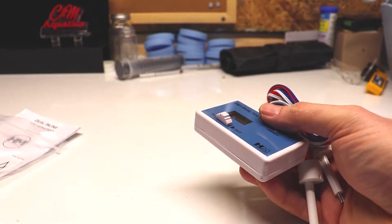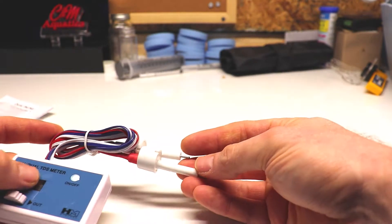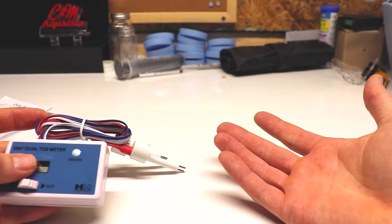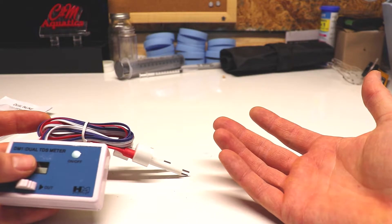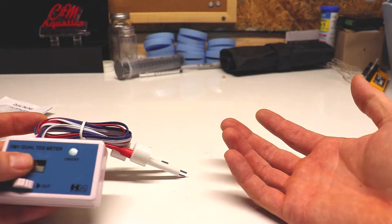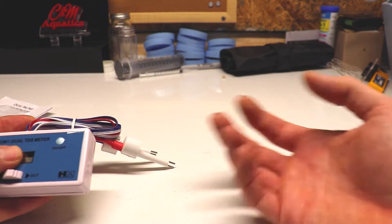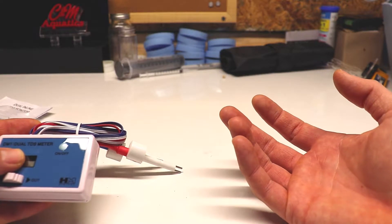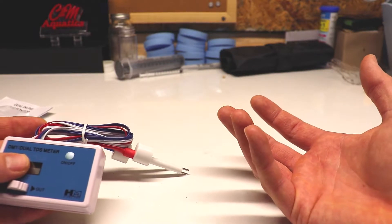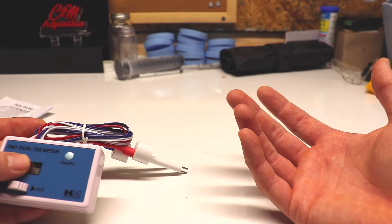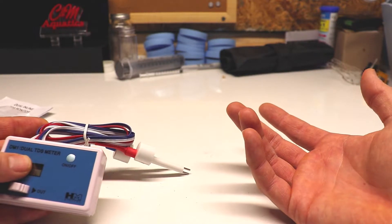Different filters recommend different things. I've been replacing my filters every six months to twelve months, but I don't know if I'm changing them too early or if I'm going too long. I go through a lot of RODI water with all the systems we have set up here. I'm using roughly 55 gallons every two or three days just for my top-off water.